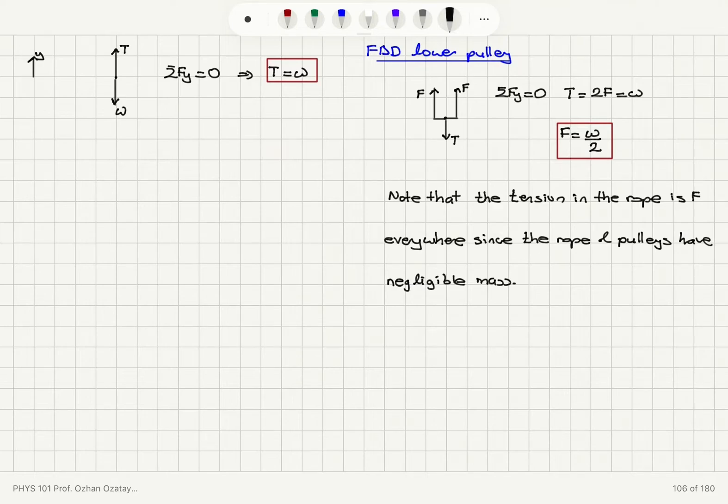Now, what happens if the rope has a measurable mass? You can look at the heavy rope problem.